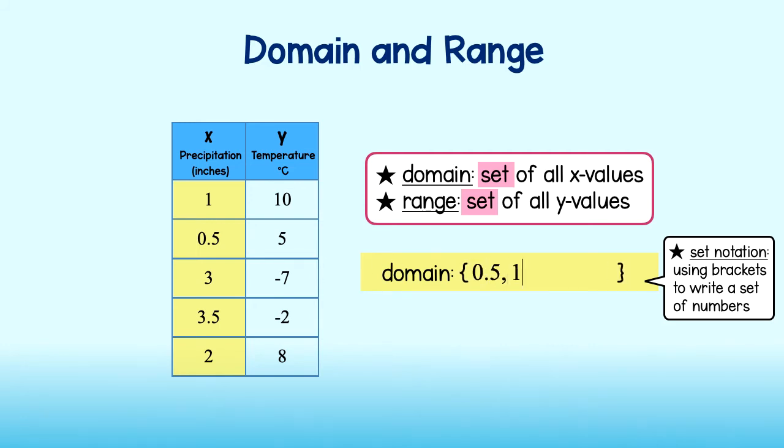5 tenths, 1, 2, 3, and 3 and 5 tenths. There, that is the domain of Janice's data.